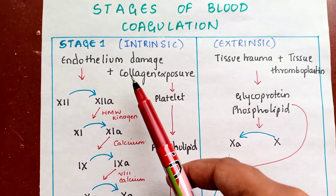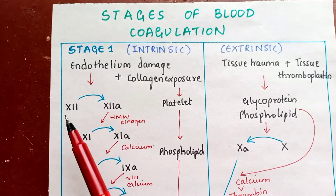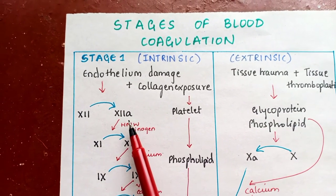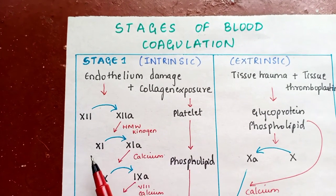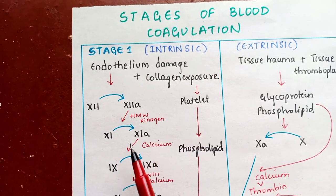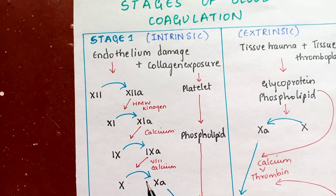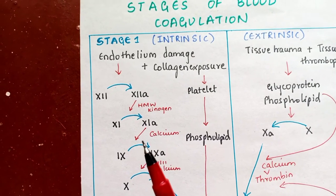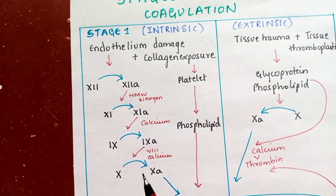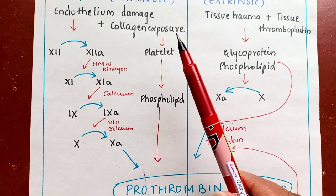In Stage 1, intrinsic pathway: whenever there is injury, endothelium damage occurs and collagen is exposed. This collagen exposure causes Factor 12 activation, which in turn activates Factor 11, which activates Factor 9, and activated Factor 9 activates Factor 10. They activate each other one by one, which later leads to the activation of prothrombin.